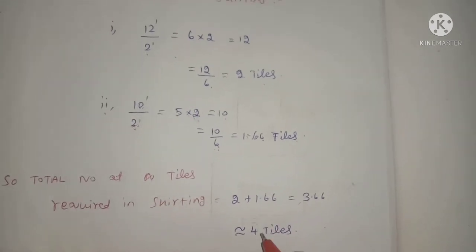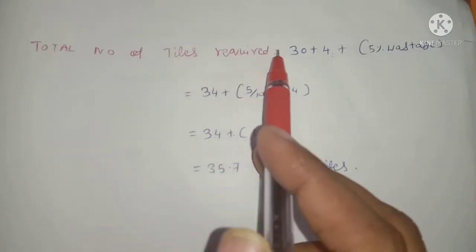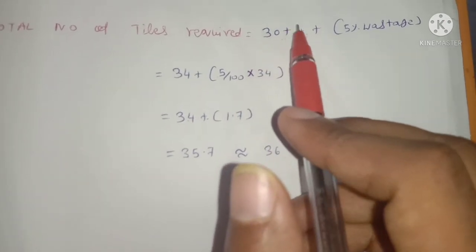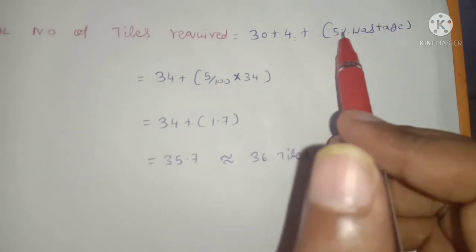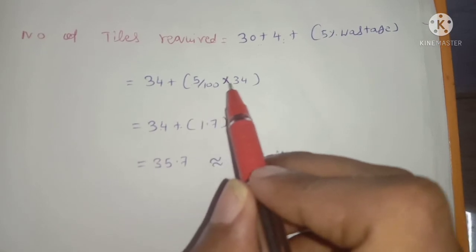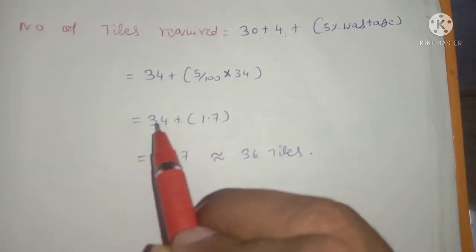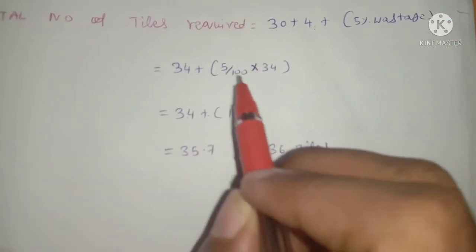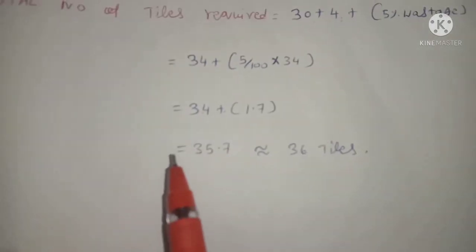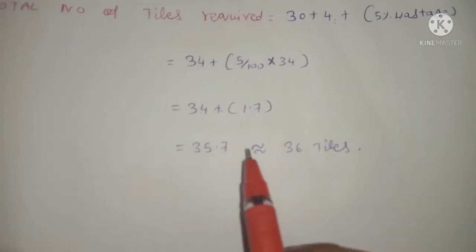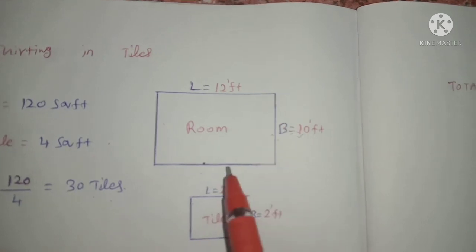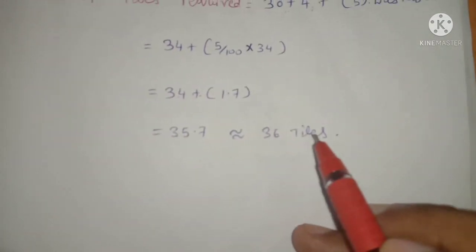Total number of tiles required equals floor tiles plus skirting tiles. That is 30 plus 4 equals 34. Adding 5% for wastage: 34 plus 5 divided by 100, approximately equals 35.7, so approximately 36 tiles. For a 120 square feet floor, you need approximately 36 tiles.